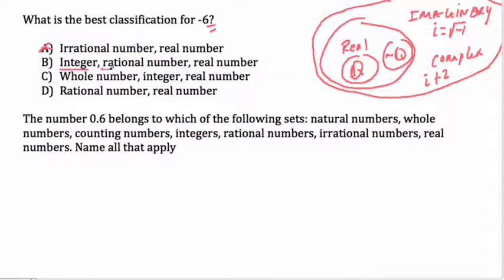Rational numbers, any number that can be written as a fraction. Well, negative 6 can be written as a fraction in many ways. You could write negative 6 over 1. You could write negative 12 over 2. You can keep going, any equivalent fraction. And of course, it's a real number. It's not imaginary, it's not complex. So that one works.